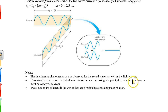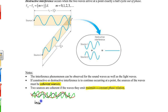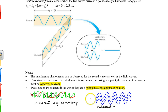Another term is coherent sources. Two sources are coherent if they maintain a constant phase relationship. An incoherent source, like a common lamp, produces light of all different frequencies that are not in phase with one another. A coherent source, like a laser, produces light waves that are exactly in phase with each other — same frequency, crest to crest, trough to trough.